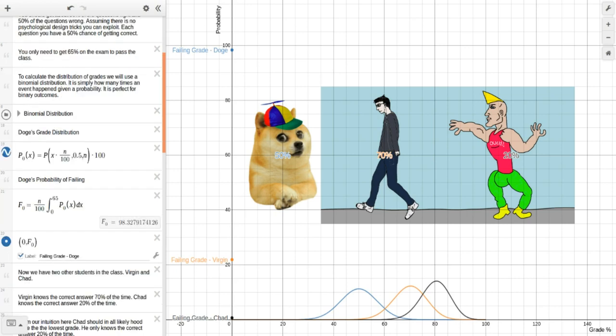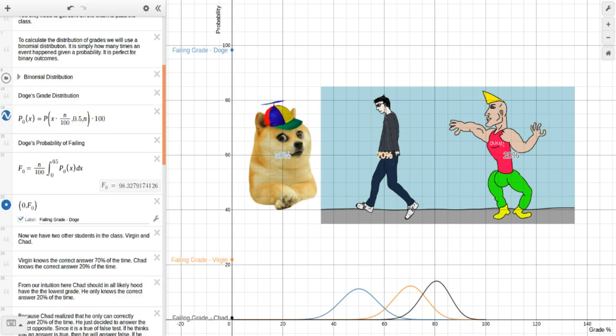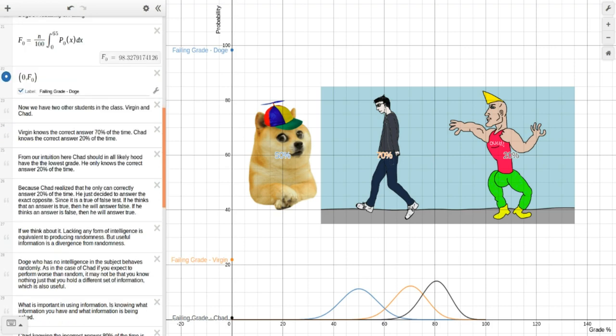Now, so we have two other students. We have Virgin and Chad. Virgin knows the correct answer 70% of the time. Chad knows the correct answer 20% of the time. From our intuition here, Chad in all likelihood should have the lowest grade. He only knows the correct answer 20% of the time.